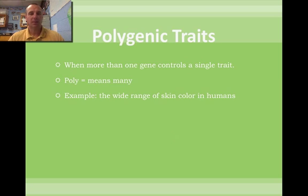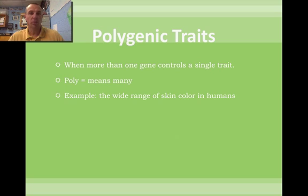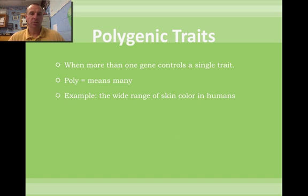The last type of inheritance pattern is polygenic inheritance. Polygenic means poly = many, so the trait can be found on more than one gene. Some traits are both polygenic and multiple allelic, or polygenic and incomplete dominance — you can have multiples. Skin color is an example of polygenic inheritance.